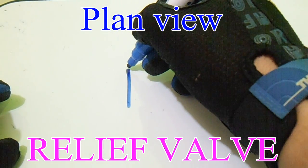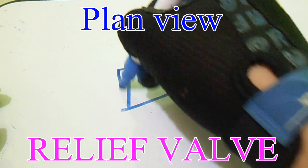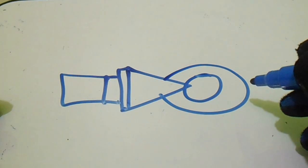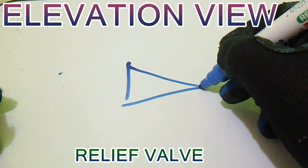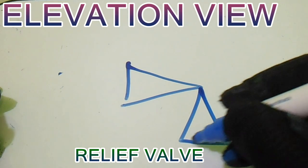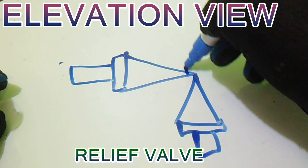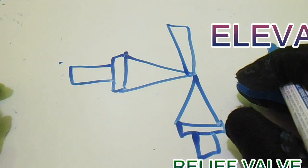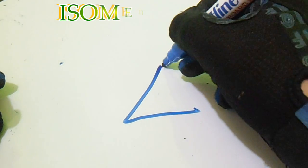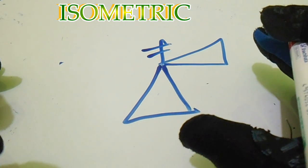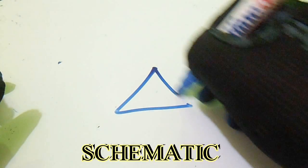For the schematic diagram it looks like this — three-way valve. Next is the relief valve. For the plan view, this is the relief valve plan view. For the elevation view, this is the elevation view. For the isometric, this is the isometric relief valve. For the schematic, it looks like this.